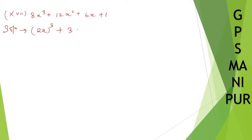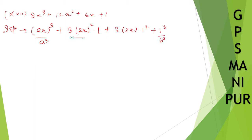This I can write down as 3 times (2x)² times 1 — that is 3 times 4 is 12, giving 12x². The formula is a³ + 3a²b + 3ab² + b³, which equals (a + b)³. So the answer is (2x + 1)³.